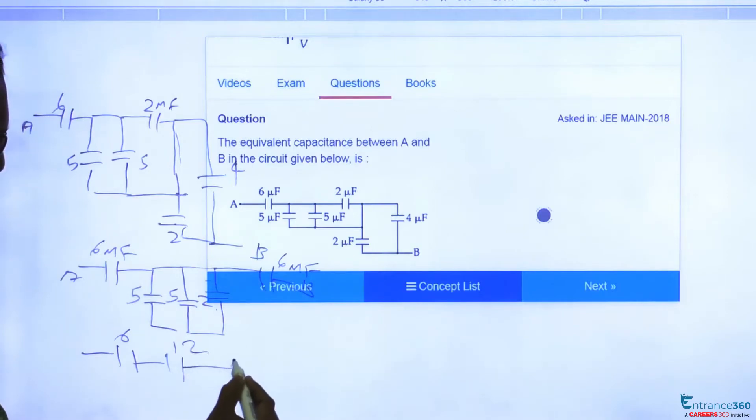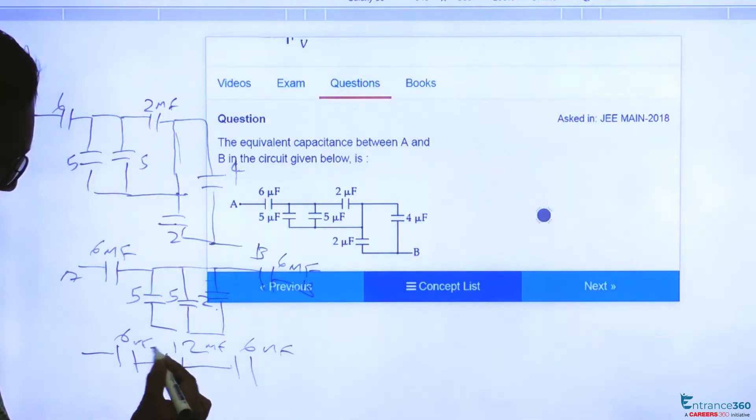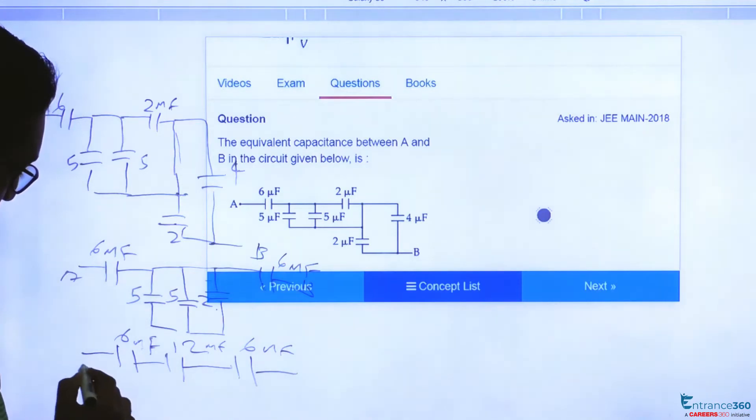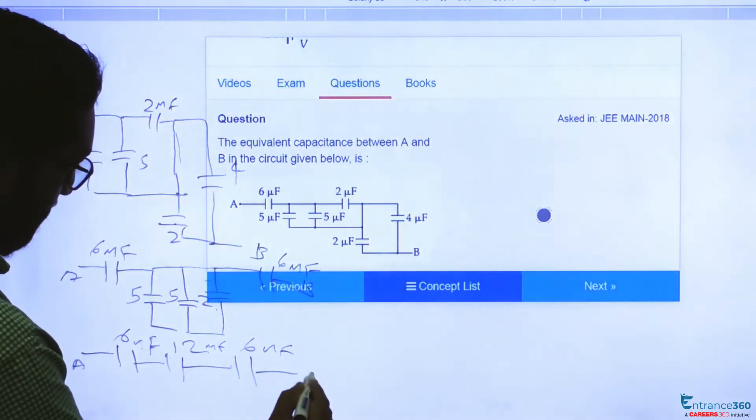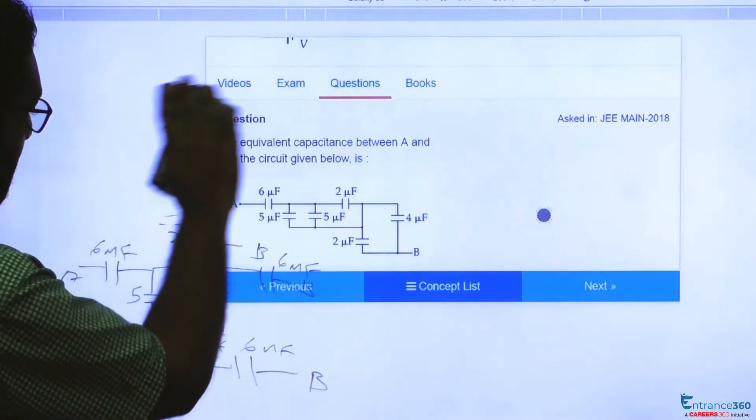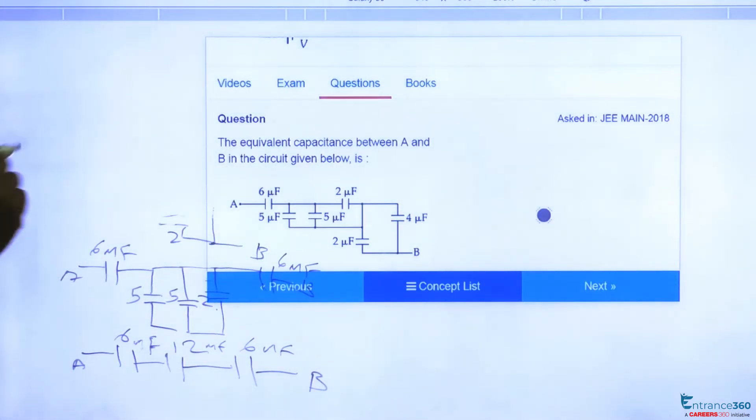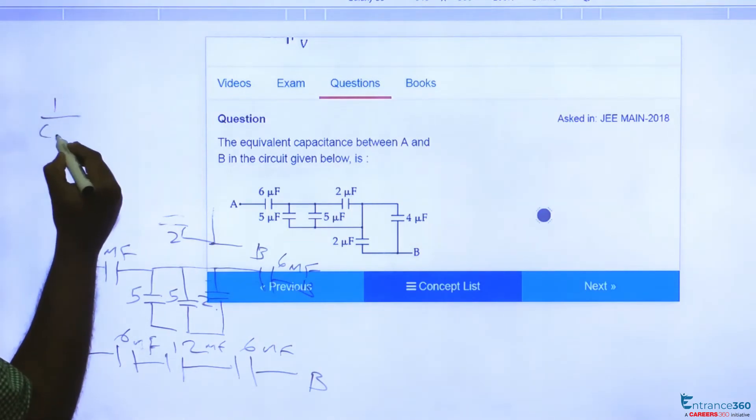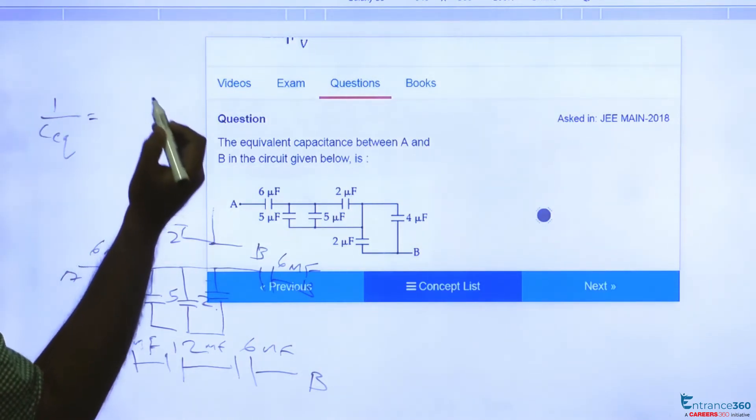12 and another 6 in series. So net capacitance connected in series will be C equivalent. 1 by C equivalent equals 1 by C1.